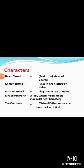To know the story properly, you need to know the characters first. There are five characters. The first is Helen Turrell, the central character of the story, said to be the sister of George Turrell. George and Helen are said to be brother and sister. Michael Turrell is the illegitimate son of Helen and George.